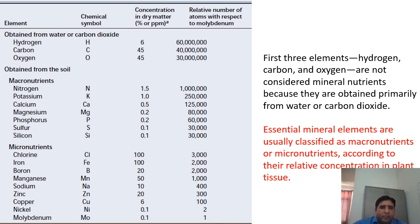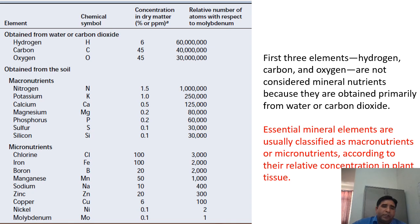The other macronutrients are nitrogen, potassium, calcium, magnesium, phosphorus, sulfur, and silicon. These are known as macronutrients because they are required in comparatively large quantities. Micronutrients, needed in very small quantities, include chlorine, iron, boron, manganese, sodium, zinc, copper, nickel, and molybdenum.